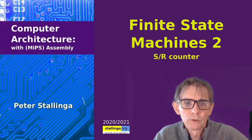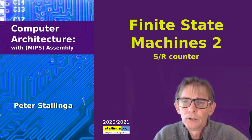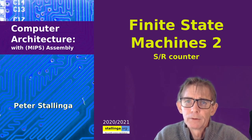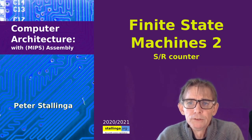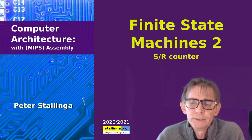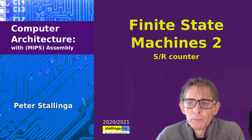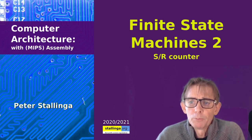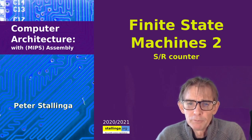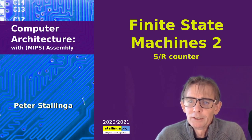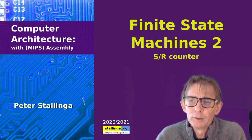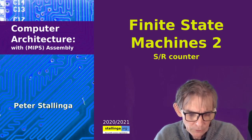Hello everybody and welcome to this lecture on computer architecture. Today we take another look at finite state machines. Remember in the last lecture we made a finite state machine that had no input but only output and memory — that is a so-called Moore machine or a sequencer. Today we take another example of a Moore machine, but a little bit more complicated, because we take a more complicated flip-flop as our basis, namely the set-reset flip-flop. In the last lecture we took a toggle flip-flop, which is much easier to use, so now we complicate things a little bit.